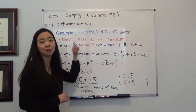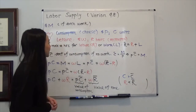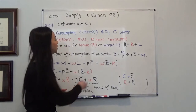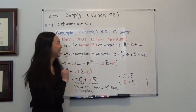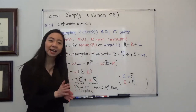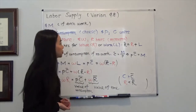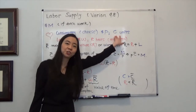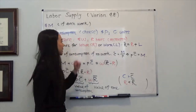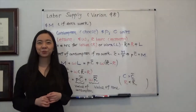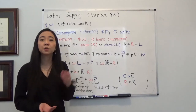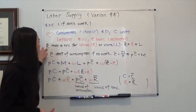Now assume that the wage rate is W dollars per hour. At the end of the day, you choose to spend R hours on leisure — R stands for recreation. And the maximum number of hours you can spend on either work or leisure will be R bar hours.